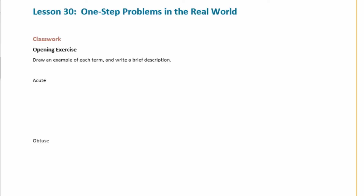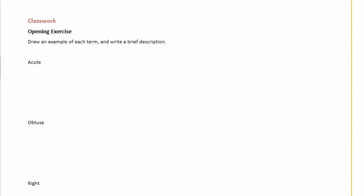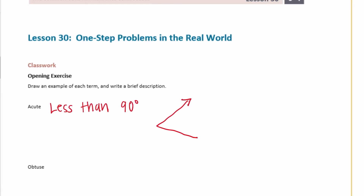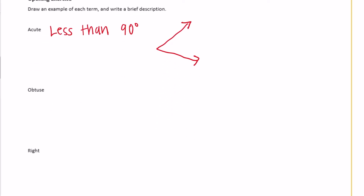Draw an example of each term and write a brief description. So an acute angle — this is all reviewing terms that you learned back in fourth grade, and then we're going to apply them to the equations we've been working on. An acute angle is an angle that is less than 90 degrees. So it is less than 90 degrees, and that might look something like this.